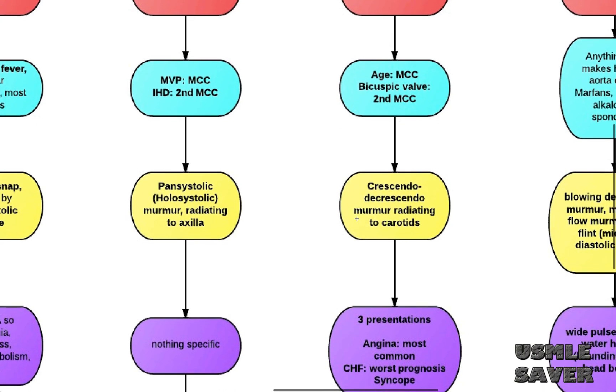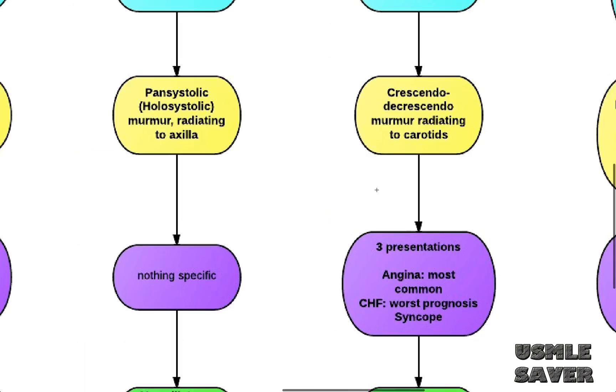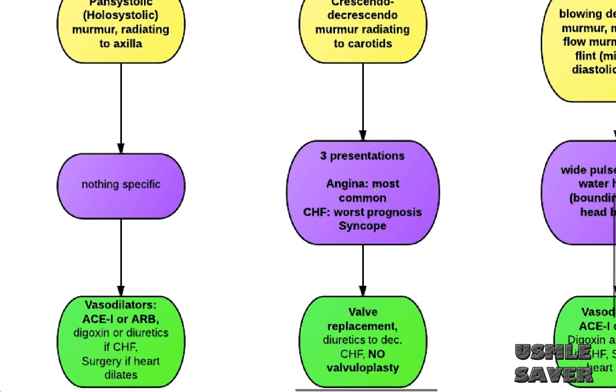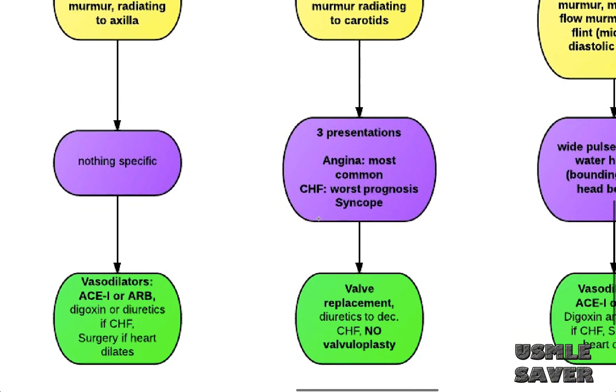In these patients, you can hear crescendo, decrescendo murmur radiating to the neck. These patients can have three different presentations, angina, CHF, and syncope. From these three, most common presentation is angina. CHF has the worst prognosis. If these patients have CHF symptoms, give them diuretics. Definitive treatment is valve replacement. Don't do valvuloplasty on these patients, because stenosis is due to calcification.